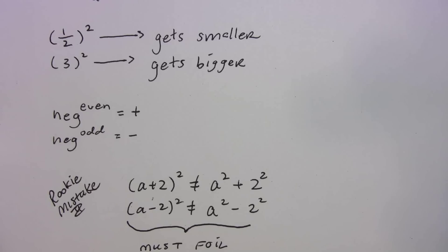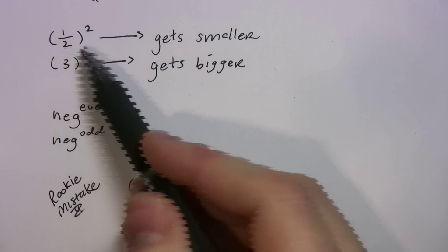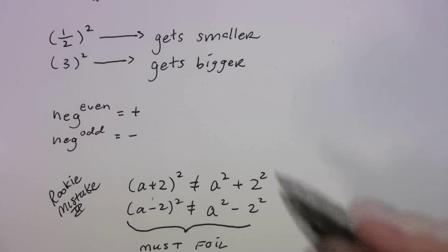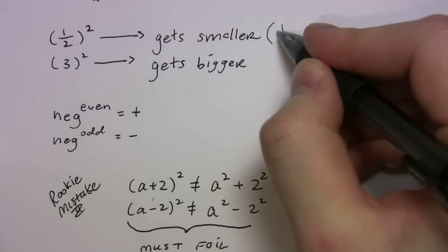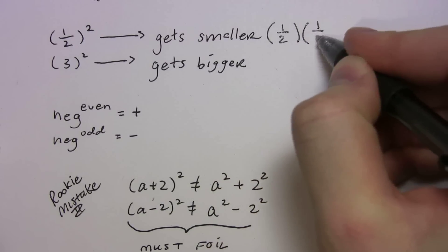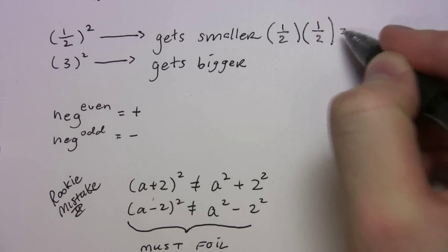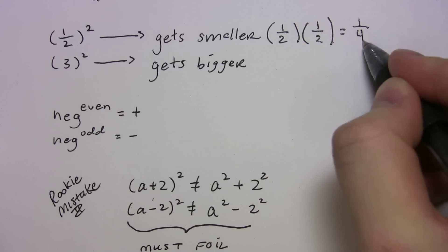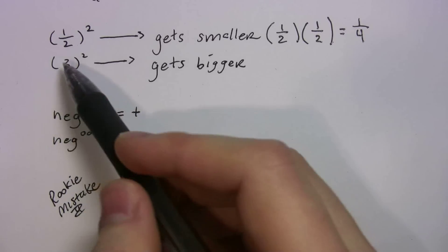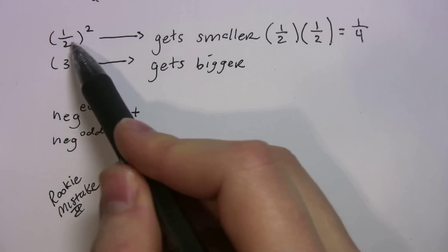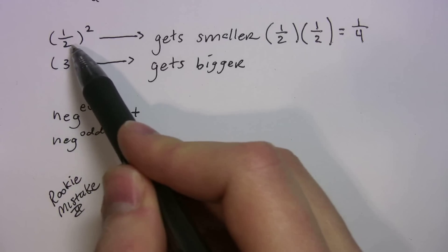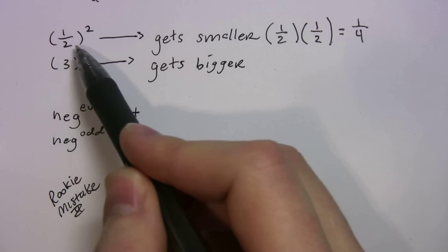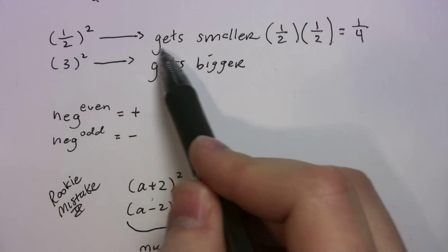You should know what happens to fractions when you square them, cube them, or raise them to the fourth power. Take one half — what happens when you square it? It gets smaller. A half times a half, multiplying across, gives us a fourth. Any time you have a fraction less than one — a half, a third, a fourth — and you square it or cube it, it's going to get smaller.